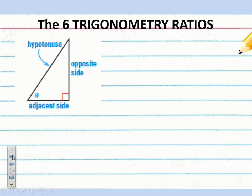You see in this diagram here's the acute angle. It's labeled with what's called a theta — that's a zero with a little line through it. From that angle's perspective, the side opposite is labeled, the adjacent side is labeled, and the hypotenuse is labeled. From there, we can set up some trig ratios.